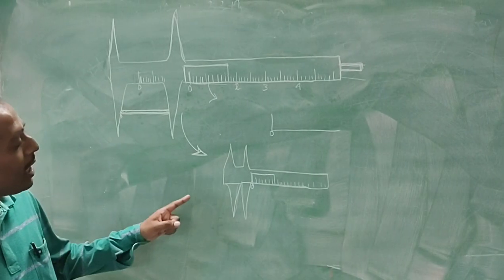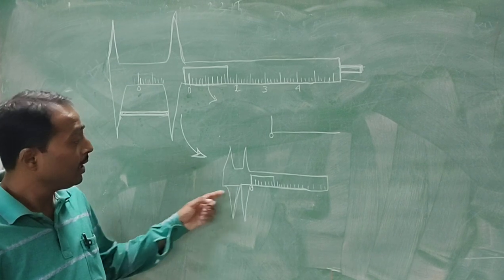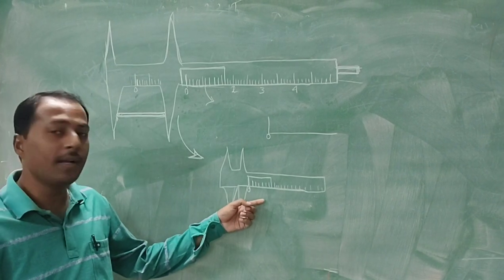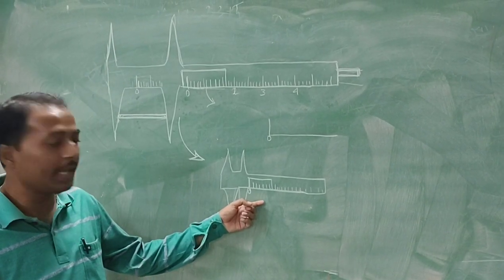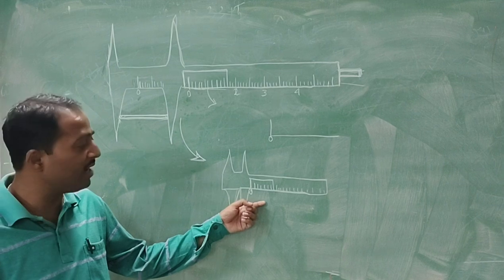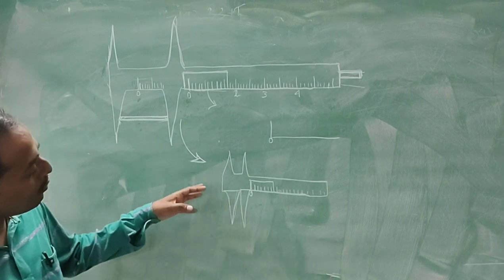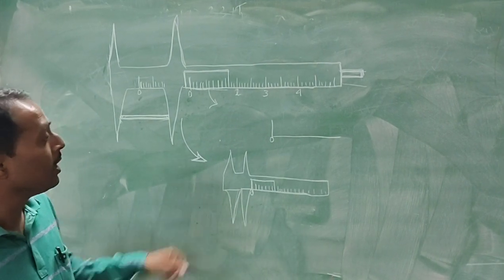Now I am explaining the zero error of the Vernier caliper. Each and every Vernier caliper may have some zero error, which may be positive or negative, so we have to calculate that zero error.